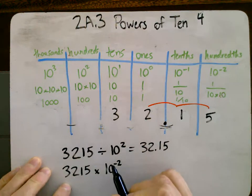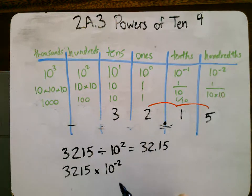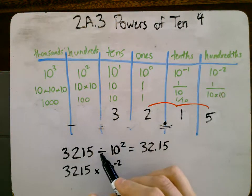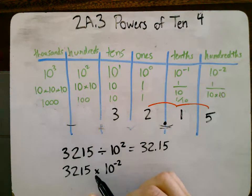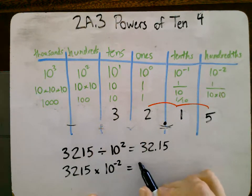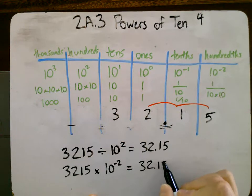They're going to cancel each other out. Because negative is opposite of positive, and division is opposite of multiplication. So I've changed both of those things, and they cancel each other out, meaning it's actually the same thing. It's going to be 32.15 again.